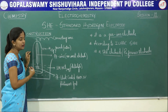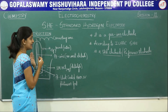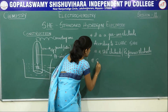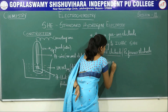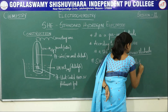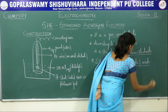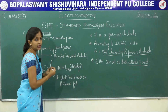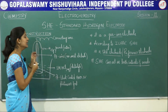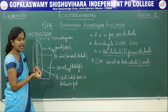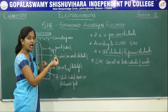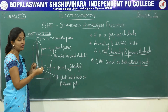Now let us see how does SHE work. SHE has an advantage that it can both act as an anode as well as a cathode. The Standard Hydrogen Electrode can undergo oxidation reactions just like an anode, and it can undergo reduction reactions just like a cathode. So let us see how it acts as a cathode, what reaction is happening, how the cell representation is written, and how SHE acts as an anode and what reactions happen at the anode.